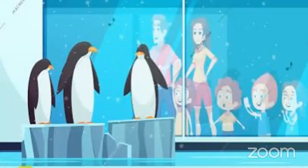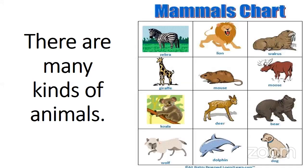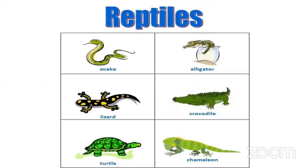Now we see cool penguins. They come in white and black colors. This is so nice to see. I haven't seen penguins in my life. Children, do you know there are many kinds of animals around us? Like mammals, birds, insects, reptiles.